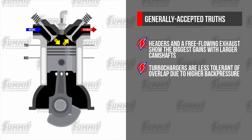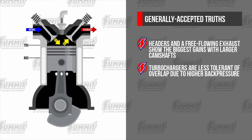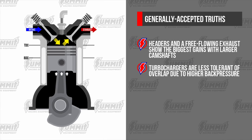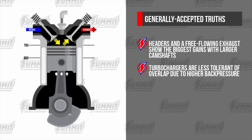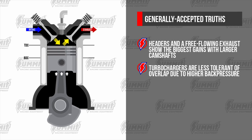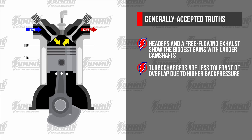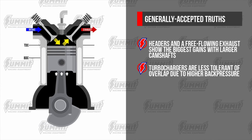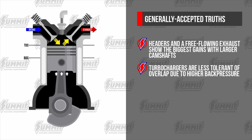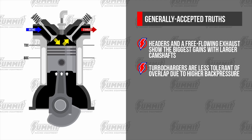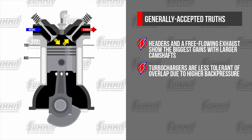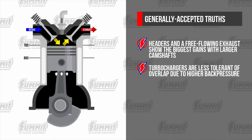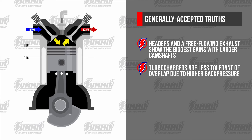A turbocharger is even less tolerant of overlap because back pressure may be as high as 3 to 1 — in other words, you may have 30 pounds of back pressure for every 10 pounds of boost. This exaggerates reversion and is the reason turbo cams have minimal overlap.